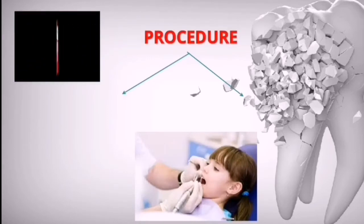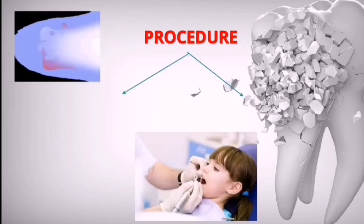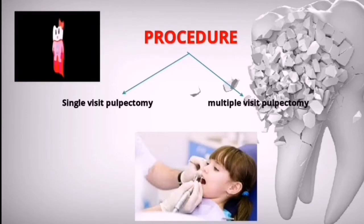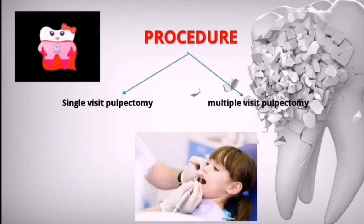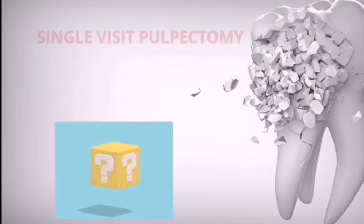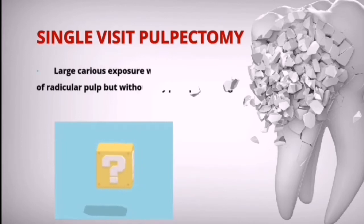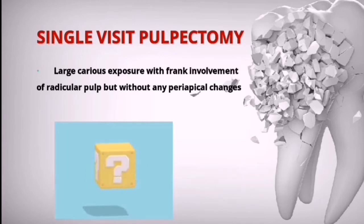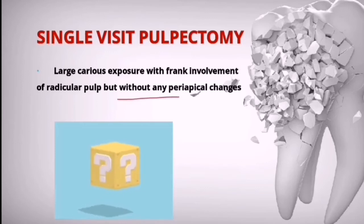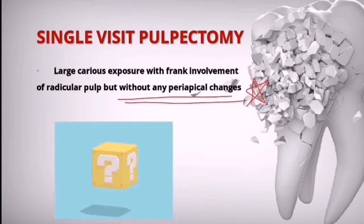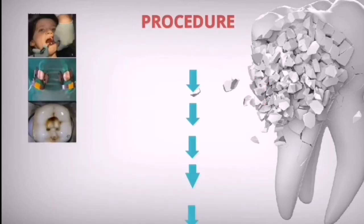Now let's see the procedure of pulpectomy. We can divide it into two types: single-visit pulpectomy and multiple-visit pulpectomy. For single-visit pulpectomy, the criteria is a large caries exposure with frank involvement of the radicular pulp but without any periapical changes — no periapical changes means you can proceed with a single-visit pulpectomy.